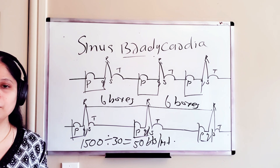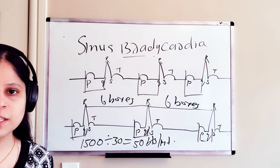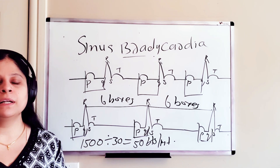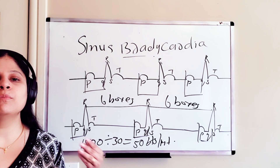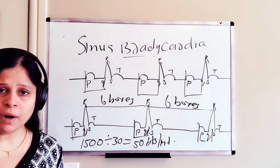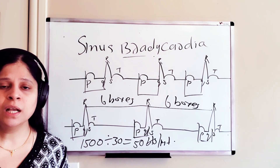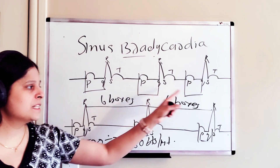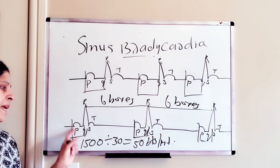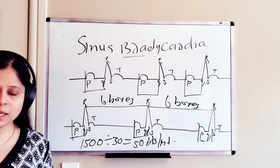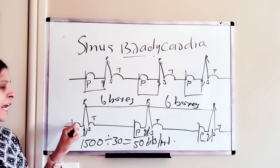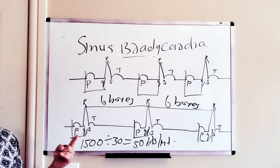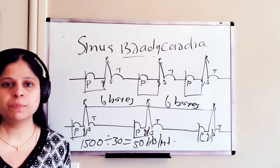So this is bradycardia — the patient's heart rate is less than 60 beats per minute. The rhythm is regular, there is atrial depolarization, ventricular depolarization, and ventricular repolarization. The RR interval is the same as the next one, the PR interval is normal, and the QRS complex is normal. The only difference is the rate — it is less than 60 beats per minute.